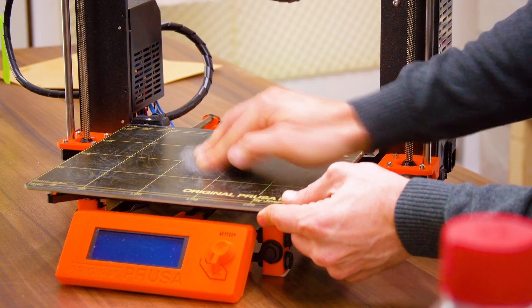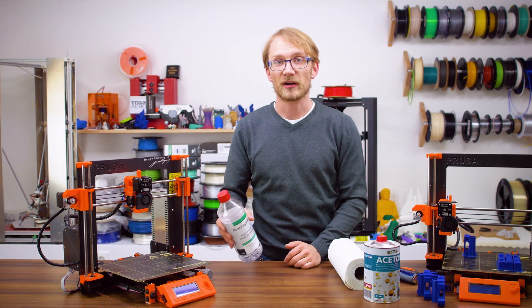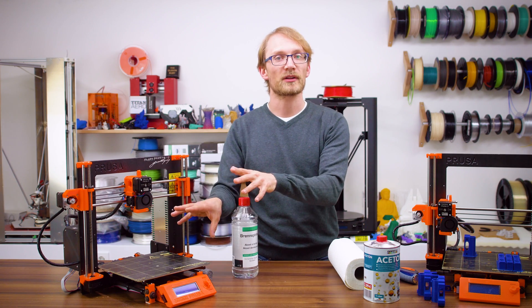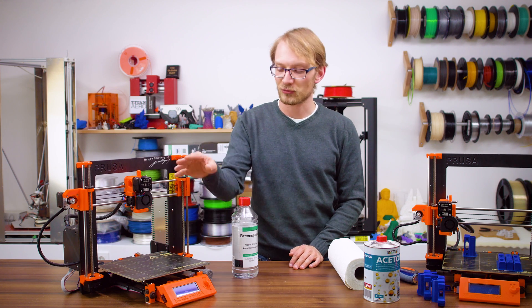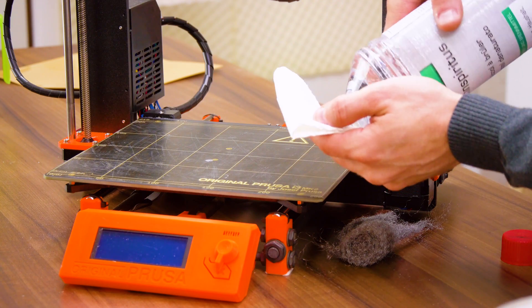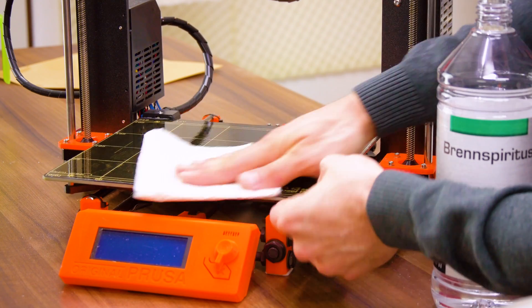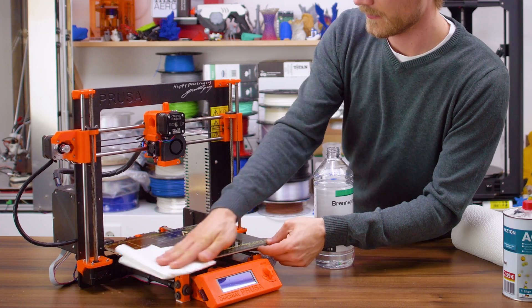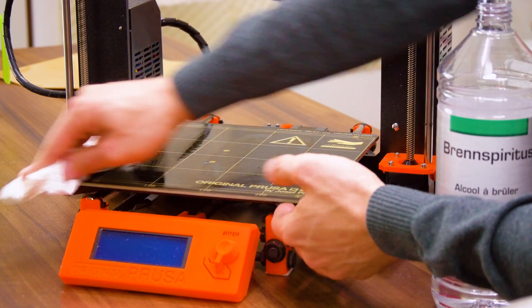Now, what I've found to work best here is to use denatured alcohol right before every print. In this case, it takes away all the dust and particles and grease you might have gotten onto the bed. But since PEI is relatively sensitive even to just fingerprints, quickly wiping it down before every single 3D print is what I've found to give optimum adhesion. And for some reason, using acetone instead to wipe down the bed before a print doesn't quite give you the same results.